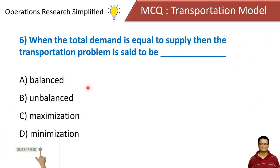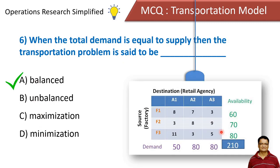When the total demand is equal to supply, the transportation problem is said to be: balanced, unbalanced, maximization, or minimization. The answer is balanced. For example, if both demand and supply have a value of 210, then this is a balanced transportation problem.